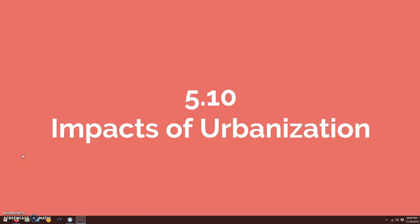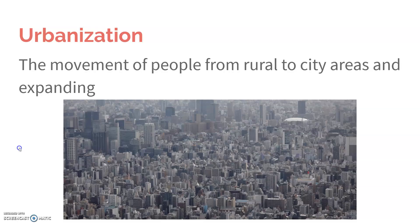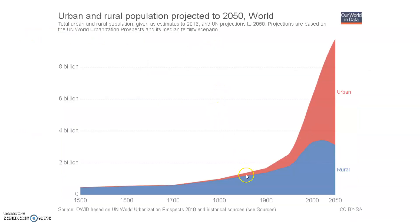5.10 is on the impacts of urbanization. Urbanization is the movement of people from rural areas to city areas, and then that entire area expanding as more and more people move to that area. We've seen, especially since the Industrial Revolution, an enormous amount of people moving to urban areas as it provides more opportunities for jobs, for education, artistic opportunities, more culture, more stuff happening — being in that region just provides more opportunities.